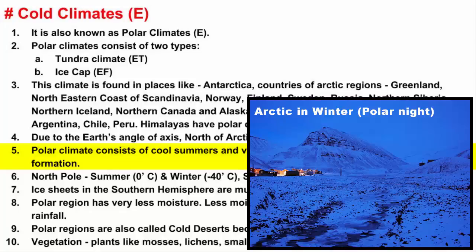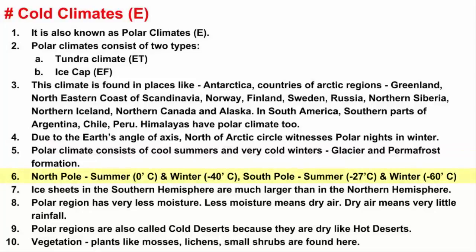A polar climate consists of short summers and very cold winters, which is the reason behind glaciers and a permanent layer of ice. The North Pole has an average temperature of 0 degrees Celsius in summer and minus 40 degrees Celsius in winter. The South Pole has an average temperature of minus 27 degrees Celsius during summer and minus 60 degrees Celsius during winter.